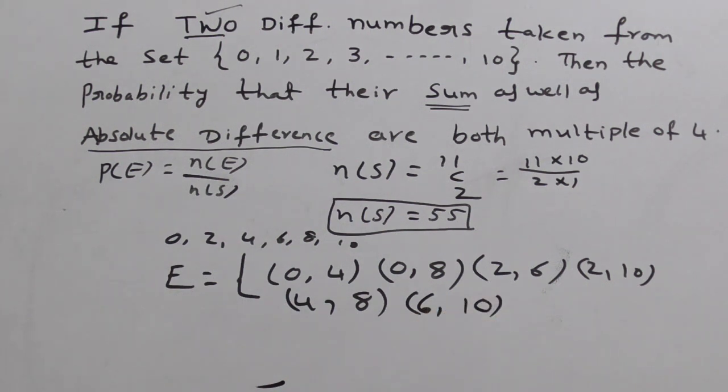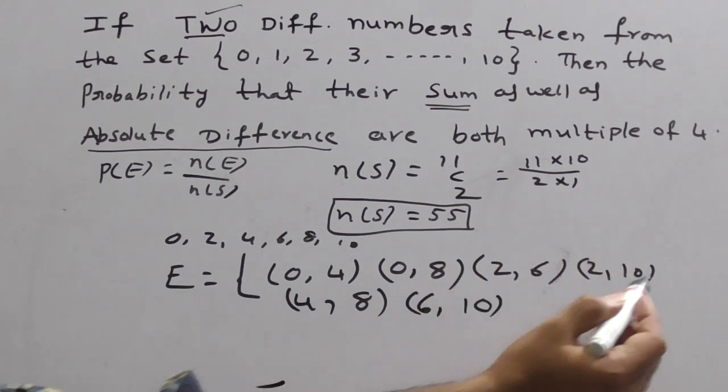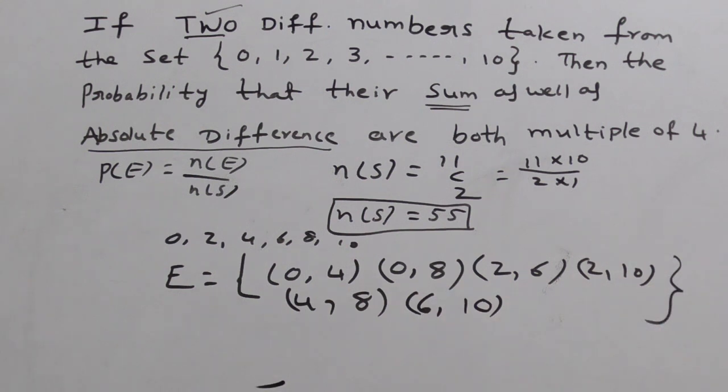For 8, 8 comma 0 already here we got. Almost it is finished. For 10, 10 comma 2 already here we got 2 comma 10. So in events we get: 0, 4. 0, 8. 2, 6. 2, 10. 4, 8. 6, 10. Observe all these ordered pairs.